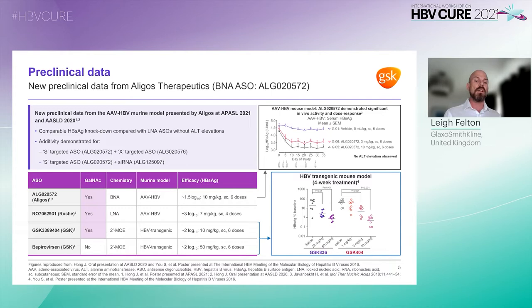Aligos also presented the first data on the potential synergistic activity of HBV-targeted ASOs and siRNAs in the same AAV-HBV murine model. I've put together a table at the bottom left that summarizes the pre-clinical activity of all four ASOs in development across different murine models.